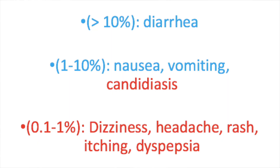Augmentin also has some side effects. More than 10% of patients will experience diarrhea. 1–10% will experience nausea, vomiting, and candidiasis. About 0.1–1% of patients will experience dizziness, a headache, rash, itching, and dyspepsia.